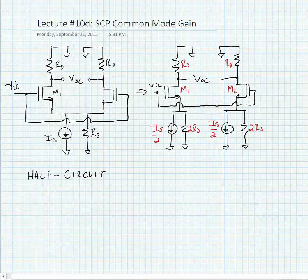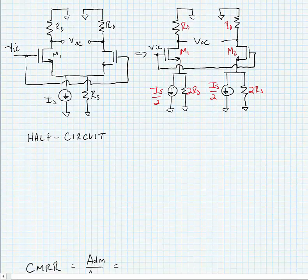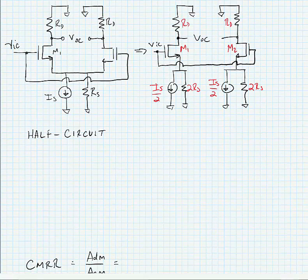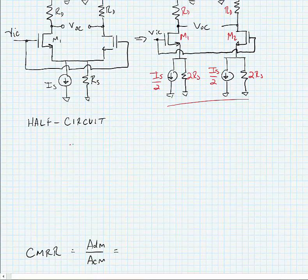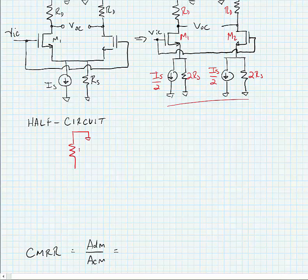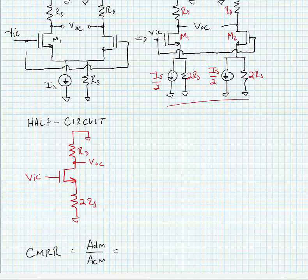Well if we do this what we can do is make an equivalent half circuit for this version and that equivalent half circuit looks as follows. So here we just have a source degenerated common source amplifier.